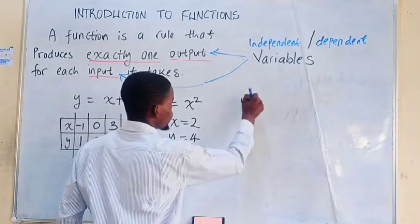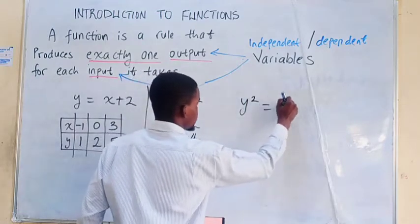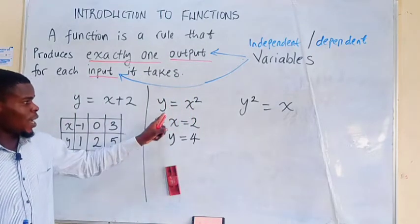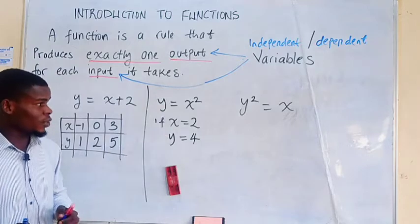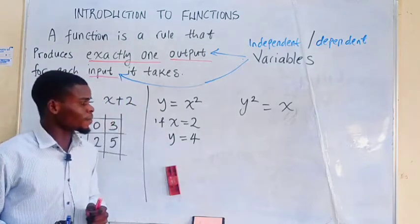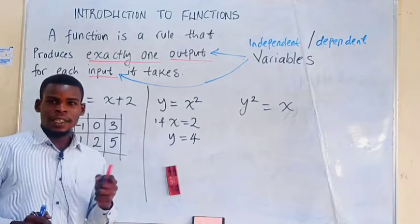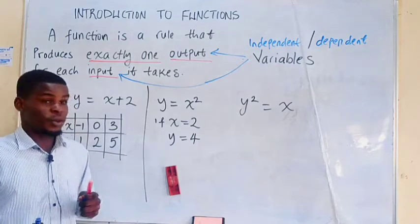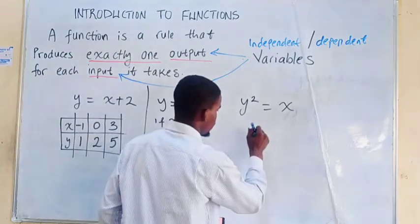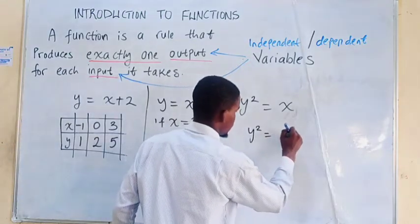An example is this. Suppose we have y squared is equal to x. Now, maybe it's similar to the previous example where we had y to be equal to x squared. But in this case, it's y squared is equal to x. Let's think of an input. Let's say we input 9. So in place of x, I'm going to plug in 9 right there. That means we're going to have y squared is 9.